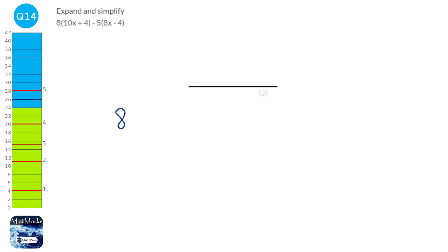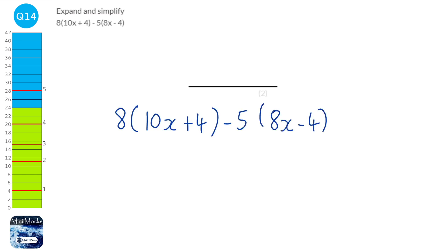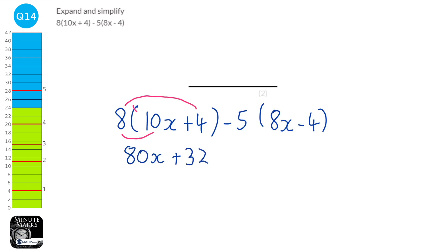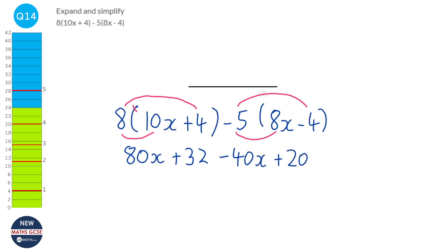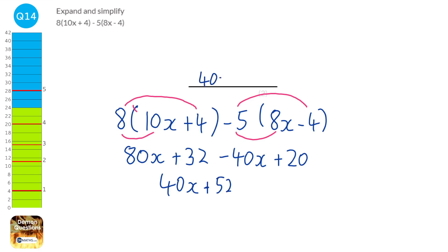Expanding 8(10x + 4) − 5(8x − 4): multiply 8 by 10x to get 80x, and 8 by 4 to get 32. Then −5 times 8x is −40x, and −5 times −4 is +20 (not −20, because a negative times a negative is positive). Collecting terms: 80x − 40x = 40x, and 32 + 20 = 52. The answer is 40x + 52.